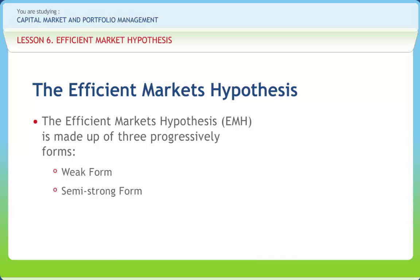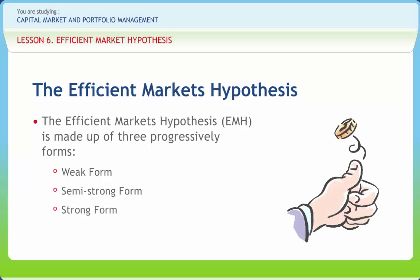Third is strong form efficiency, in which share prices reflect all information and no one can earn excess returns.